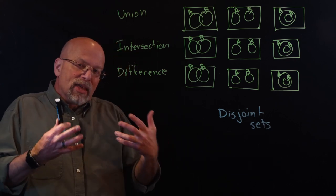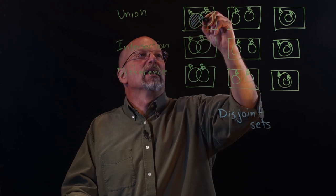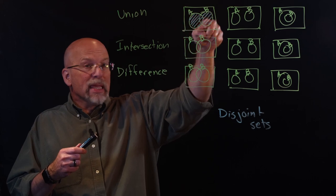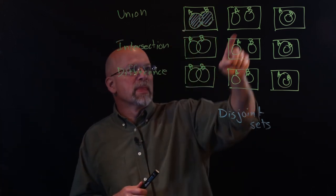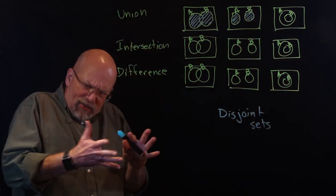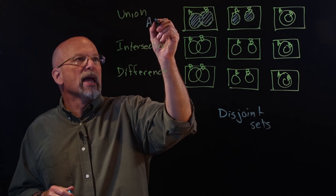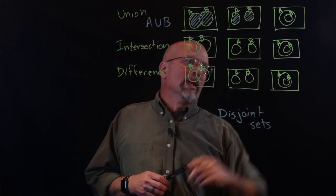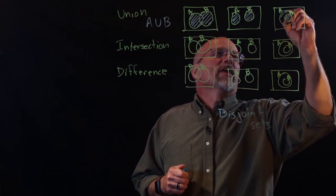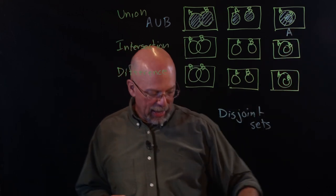Let's talk about the union first. The union is everything that is a member of set A or set B or both. In the case of the overlapping diagram, it's everything inside both circles. For the disjoint sets, it's everything in A and everything in B — even with nothing shared, everything in either set is part of the union A ∪ B. And when B is a proper subset of A, the union is everything in B along with everything in A, which is just equal to A.